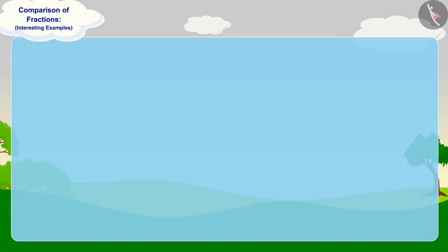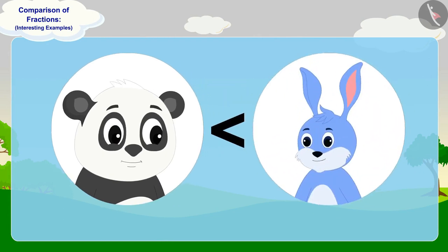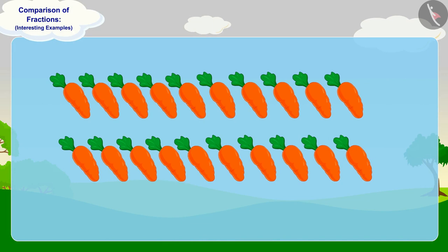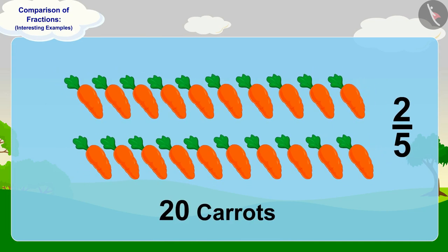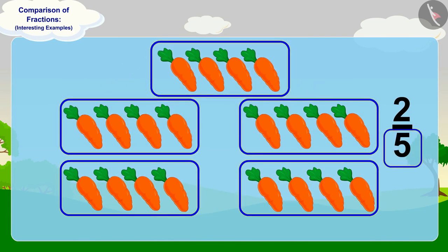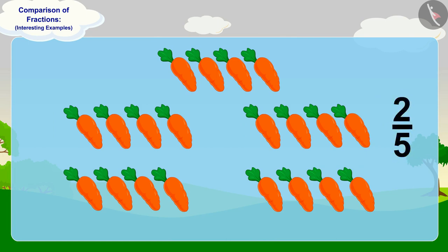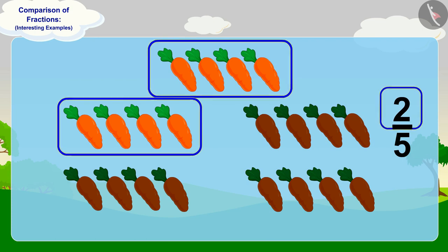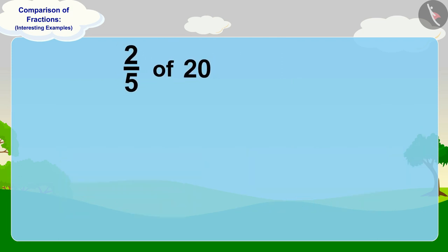Children, can you tell how many carrots will Banni get? Is that more than the number of carrots Gulu gets? You can stop the video and find the answer. Well done, children! You have found the perfect answer. To find two-fifths of twenty carrots, we will divide twenty carrots into five equal parts. In this way, there will be four carrots in each part. Now, to find two-fifths part, we have to take two parts out of these five equal parts. In this way, two-fifths of twenty carrots will be eight carrots.